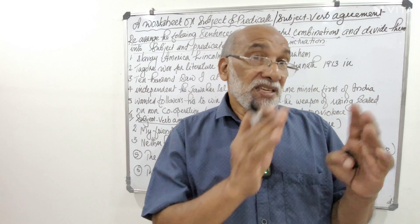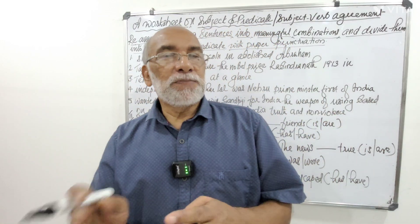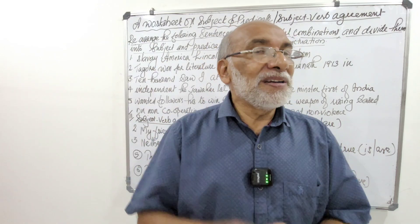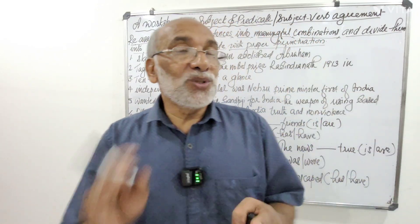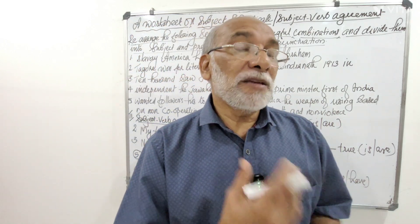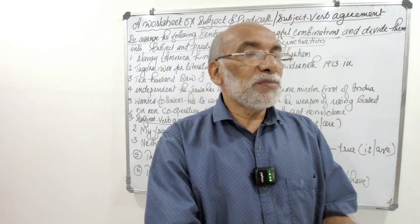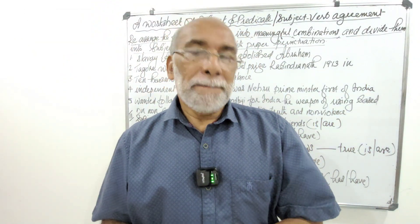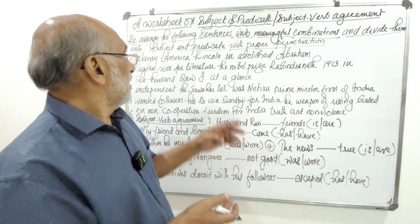Subject and predicate and subject-verb agreement — the golden principle in English grammar: the verb must agree with its subject both in person and number. Something about which we speak is the subject, and what is spoken of the subject is the predicate.